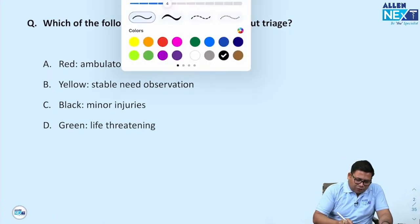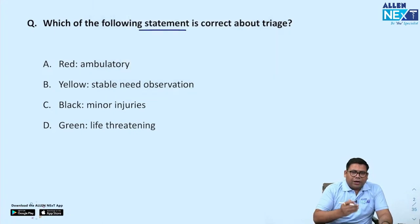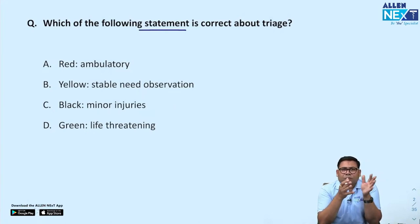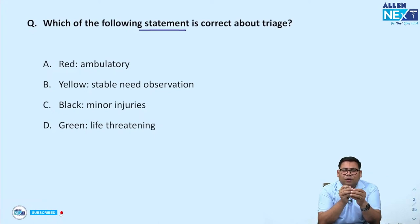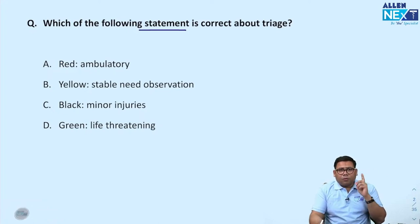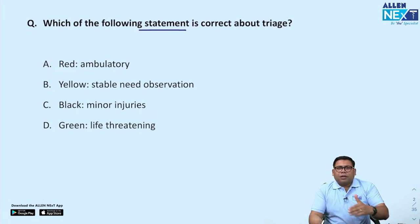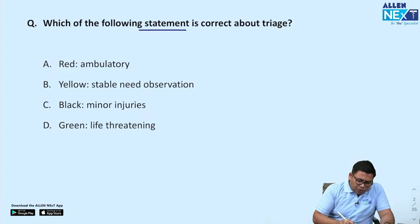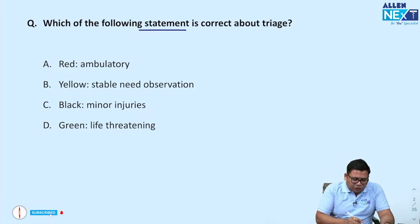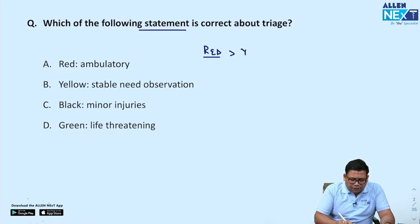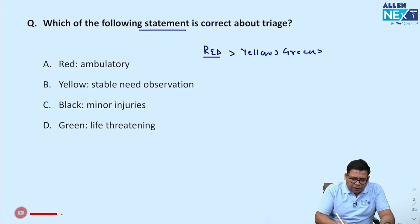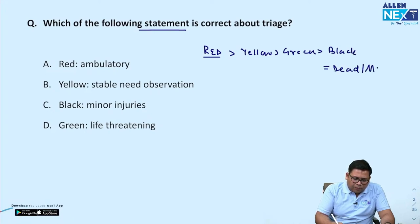The first question is a straightforward question from triage. Triage is where we have a scenario where demand and supply are not meeting, so we have to maximize the treatment output. In triage, patient priority is done by the colour coding system. The question asks which of the following is correct about triage. Red is given maximum priority, then yellow, then green, and then black. Black includes either dead or moribund people.